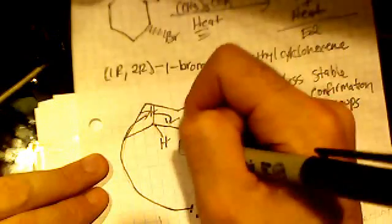The bulky base is able to come in, take the hydrogen, which gives its electrons to this bond, forming a double bond. The bromine leaves as a leaving group, and that gives us our new product.